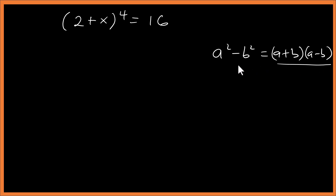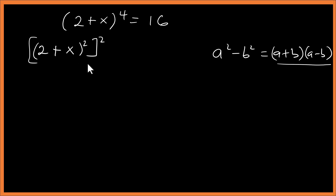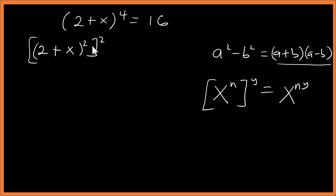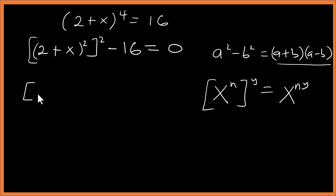We are going to write this as (2 + x) squared, all squared. When we're given x to the power n, raised to y, that's the same as x to the power n×y. So (2 + x) to the 4 is the same as [(2 + x)²]². Let's write this minus 16 equal to zero.